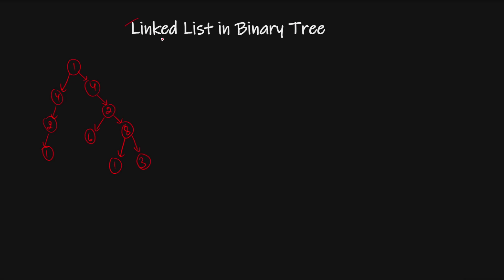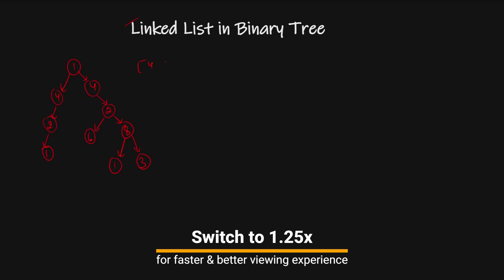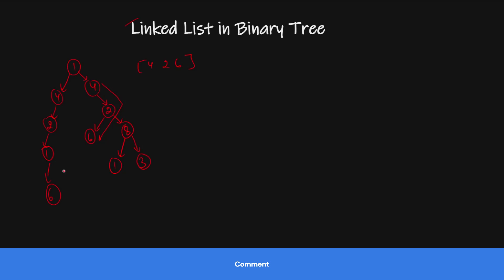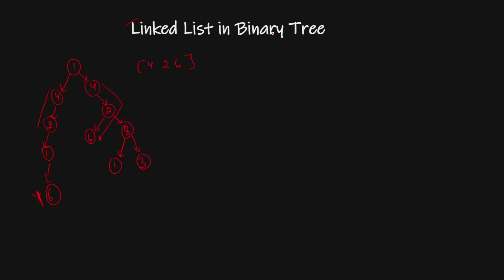Hello everyone, today we are going to solve 'Linked List in a Binary Tree'. In this problem, we are given a linked list, let's say 4→2→6, and we have to find that linked list in our binary tree. The linked list must be present in a downward, continuous direction.